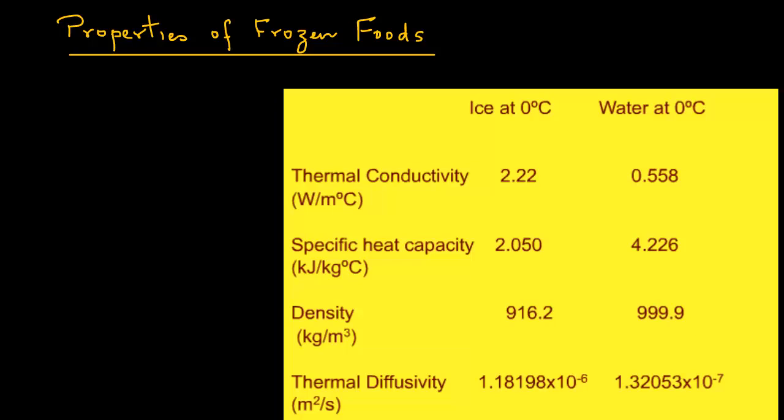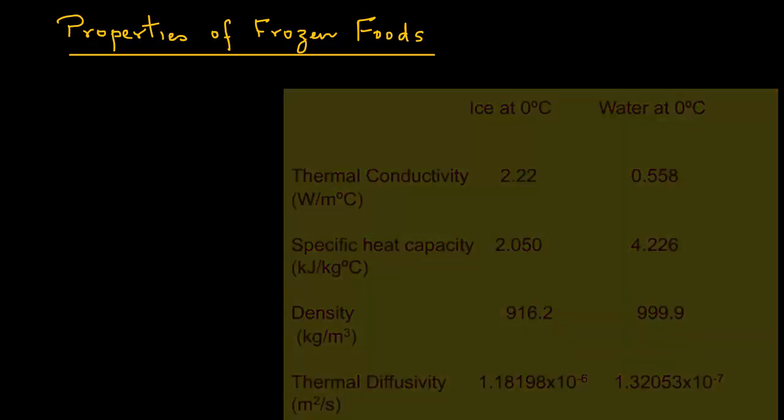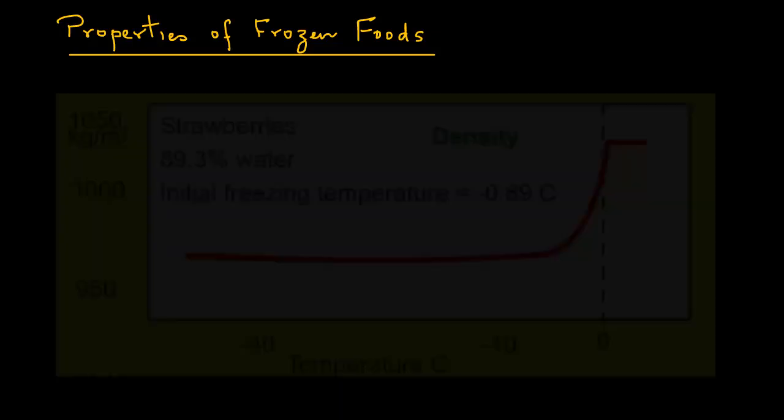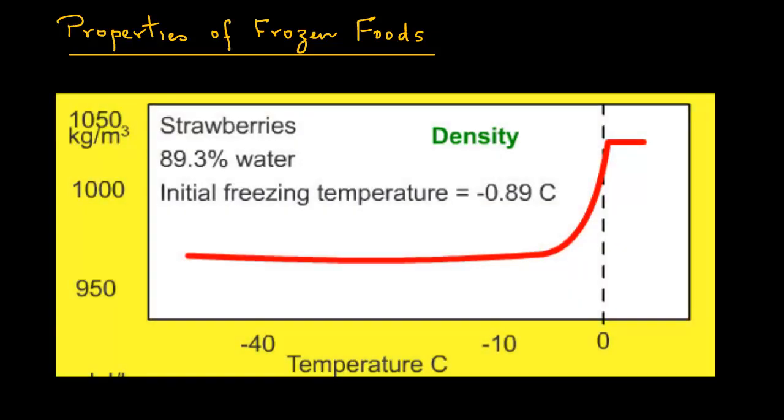We can see the striking influence of freezing temperatures on product properties by examining these figures that represent some of the experimental data. For example, the density of strawberries decreases dramatically under sub-freezing conditions.